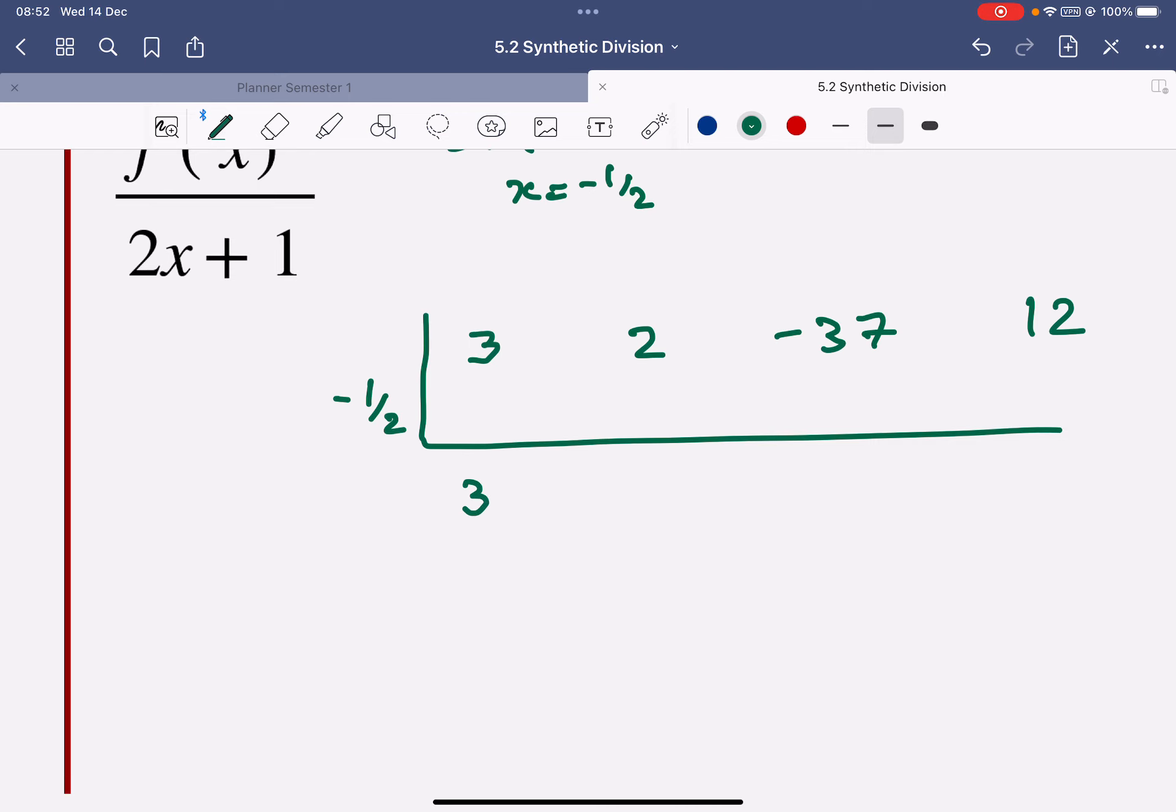So drop this down. Minus 3 over 2. That gives me 1 half. When I add them together, this gives me minus 1 quarter. So I'm going to need my calculator here.